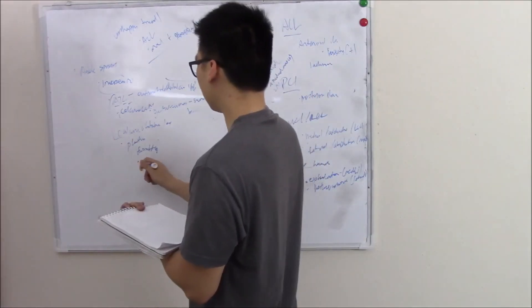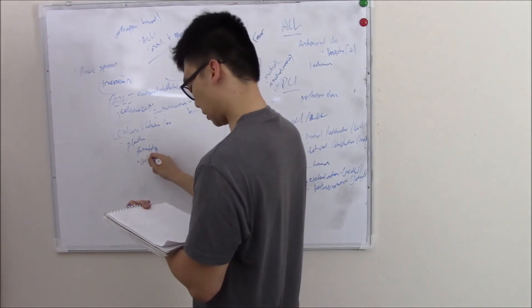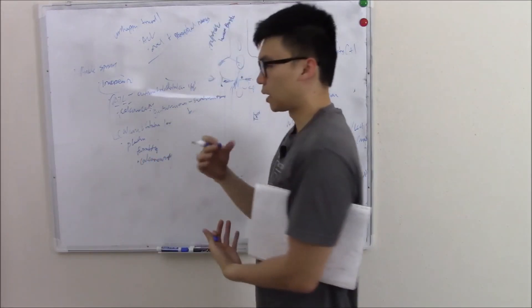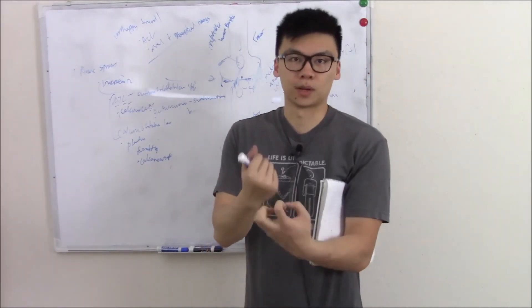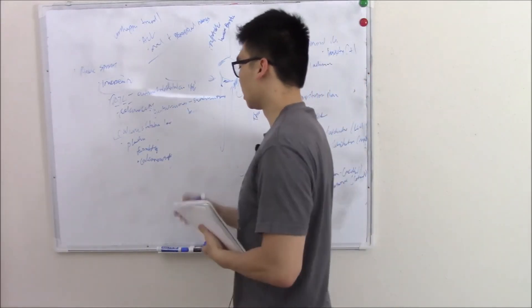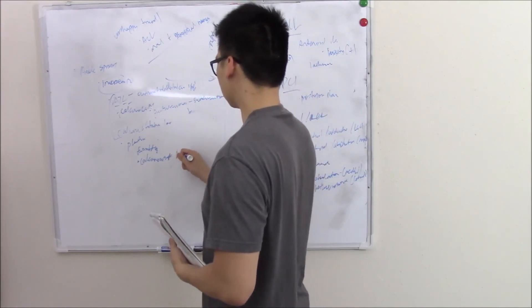Plantar fasciitis. You can have pain in the heel bone. Your heel bone is called the calcaneus. You might even see bone spurs. You remember bone spurs - we talked about that in osteoarthritis. It was from repetitive trauma, wear and tear. So calcaneus - you might see that bone spur on your heels.